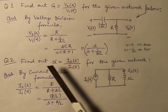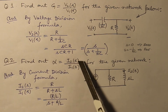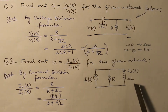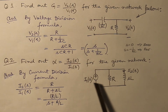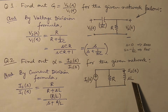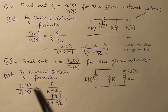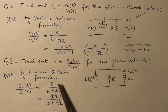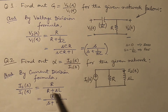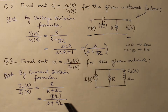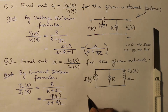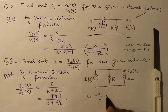Let us do question number 2, in which we are asked to find out the current gain I2S over I1S for the given network. There is a resistor and an inductor, the inductor having impedance SL in the transform domain. The output current through SL can be directly given by the current division formula: I2S over I1S is equal to R over R plus SL, which gives you R over L divided by S plus R by L. Here we do not have any zero, but we have a pole at S equal to minus R by L.